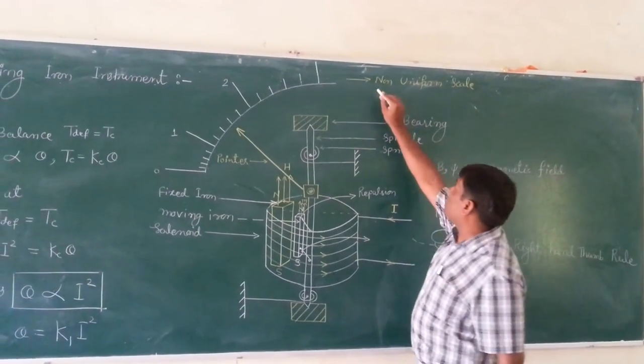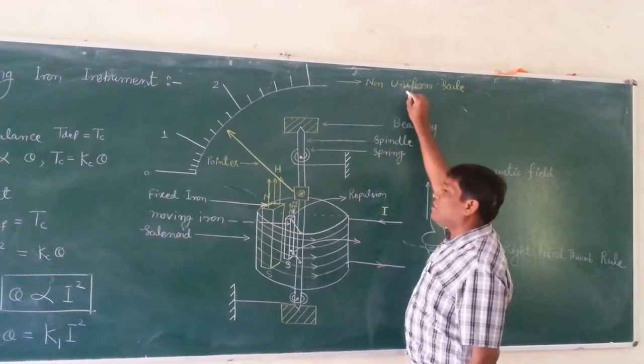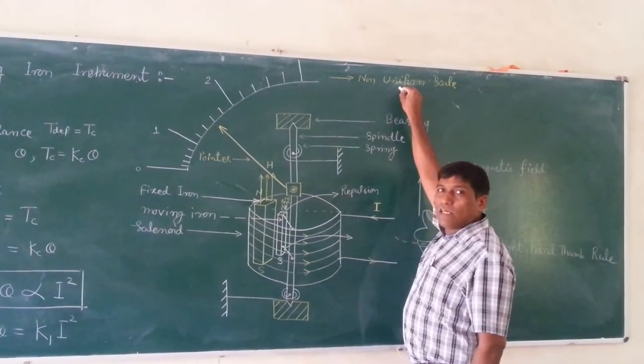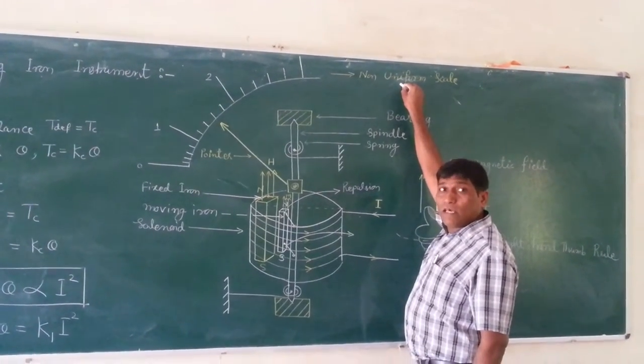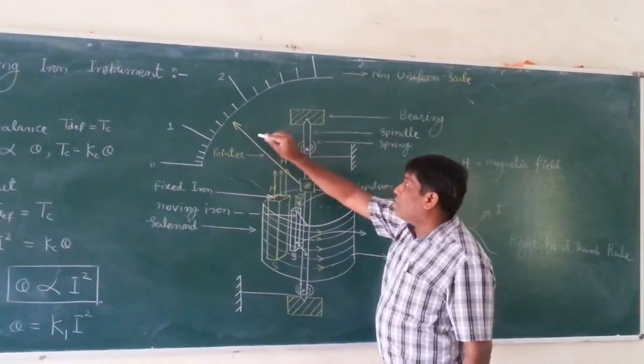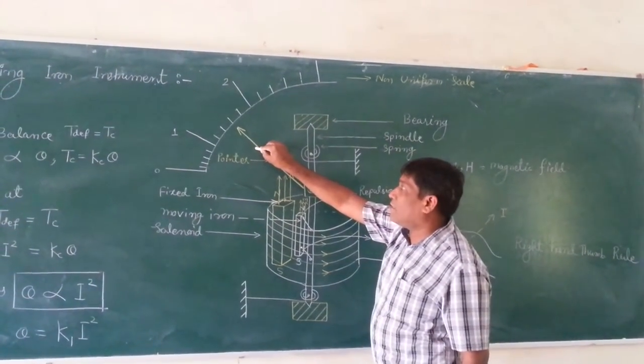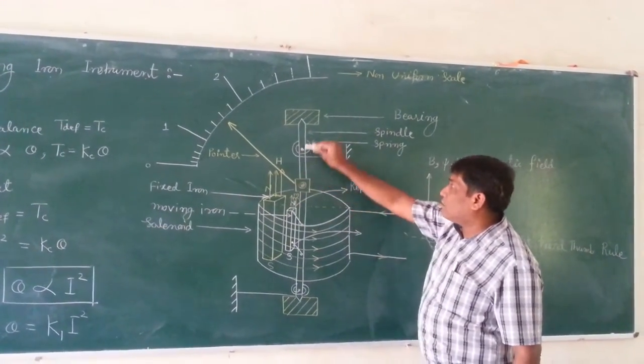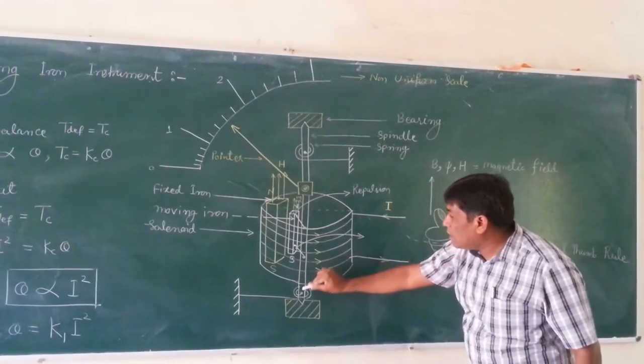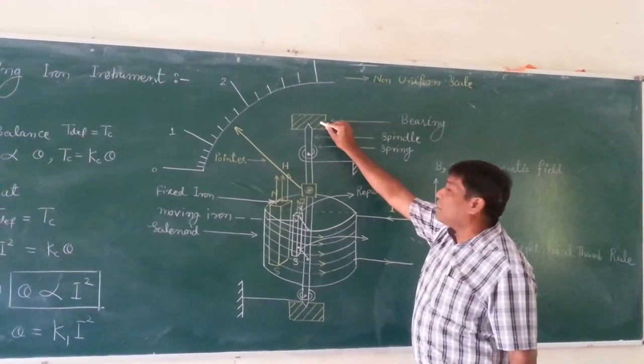We are having a non-uniform scale, this point should be noted. In other instruments we are having uniform scale, but here we are having non-uniform. Now, pointer to display the values attached to the spindle, which is pivoted in the bearings.